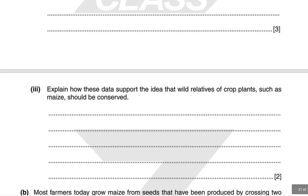These data support conservation of wild relatives of crop plants like maize because, since maize and Teosinte are still related, alleles present in wild relatives could be useful for future breeding. For example, traits could be bred into maize to help it cope with the changing climate, floods, or diseases. Because cultivated maize is so homozygous, if a disease wiped out most plants, resistant traits from Teosinte could be bred back into the population.